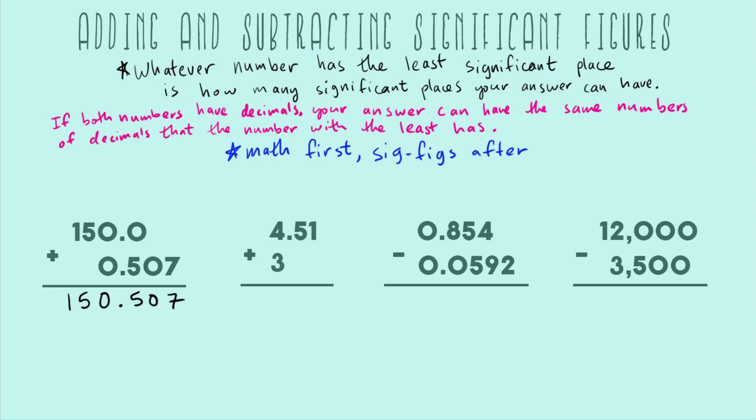In this case, both numbers have decimals. We can use our pink rule. We're just going to have our answer have the same number of decimal points that the number with the least has, numbers after the decimal. In this case, 150 only has one after decimal, but 0.507 has one, two, three after decimal. So 150 has the least, just one after the decimal.